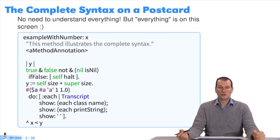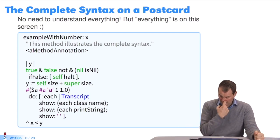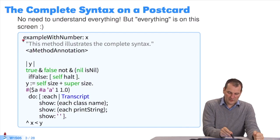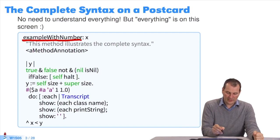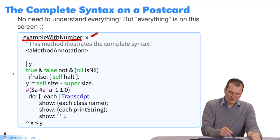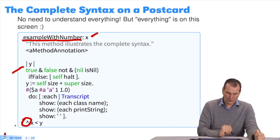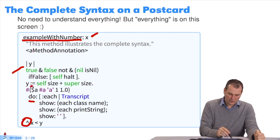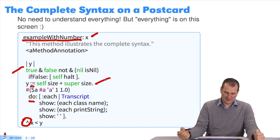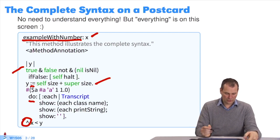Just to remind you, you have all the syntax on this slide. I can go into the details a bit now. Here's a method definition — example with number — and it has an argument. I have local variable definitions with vertical bars. I have the return, which lets me give a value. I have loops, an affectation. The full stop, for example, is an instruction separator. We'll look at all this.